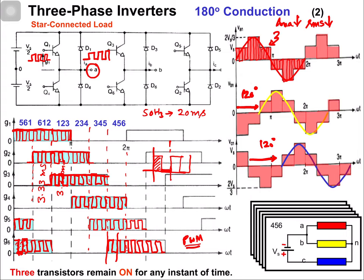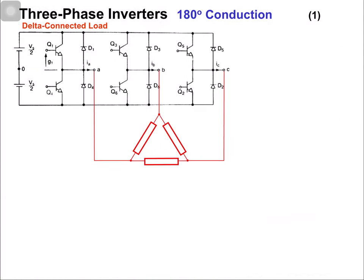This is one method to control the voltage at the output of the three phase inverter. To control the frequency, we change the time of each state. By changing the area under the curve of these pulses, we change the output voltage. Now let's discuss the three phase inverter for 180 degree conduction with delta connected load.